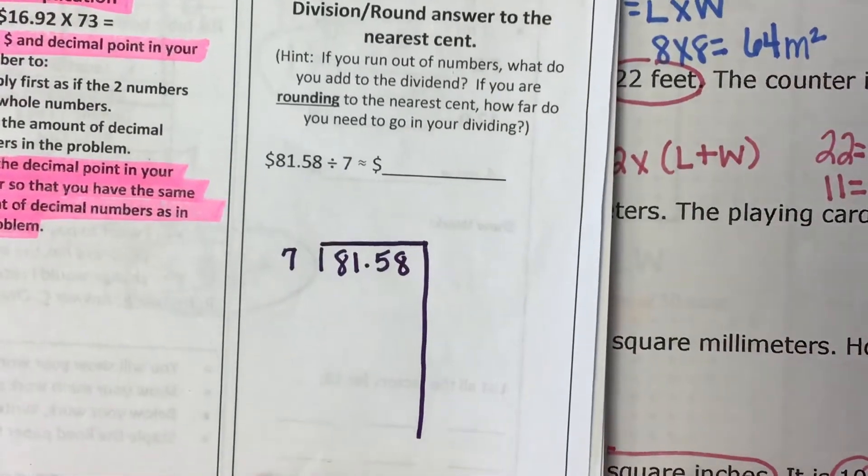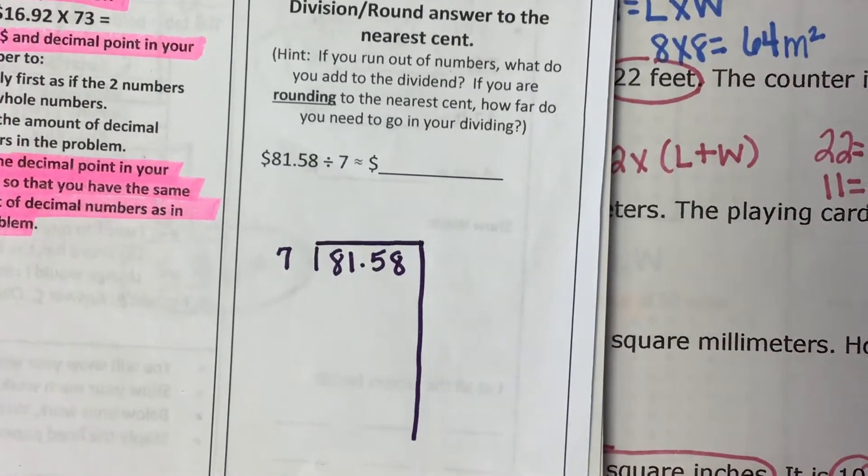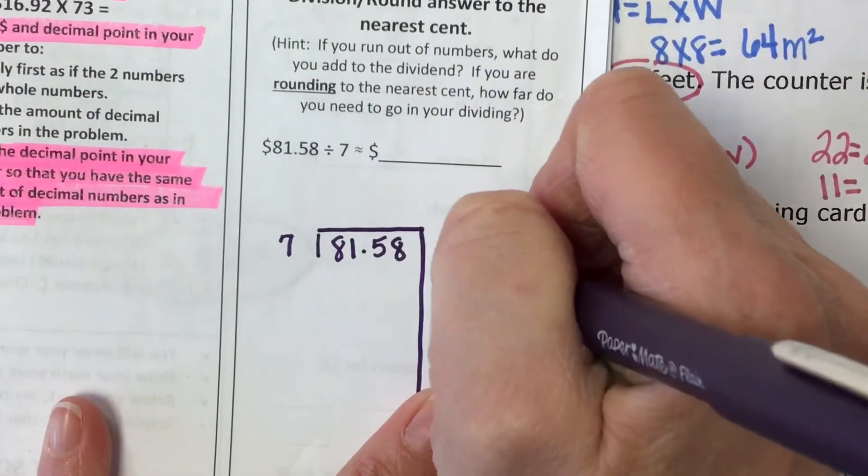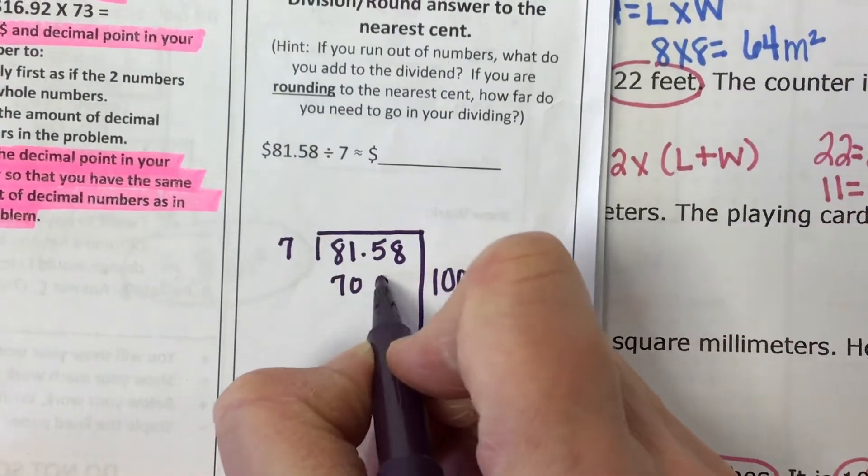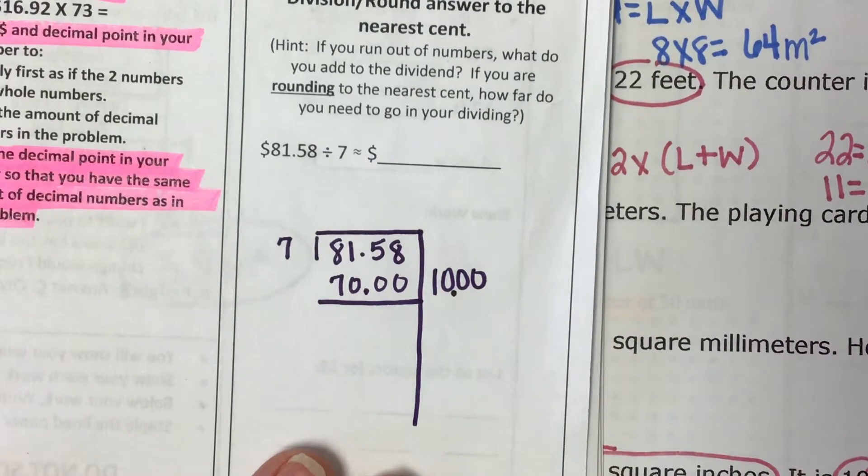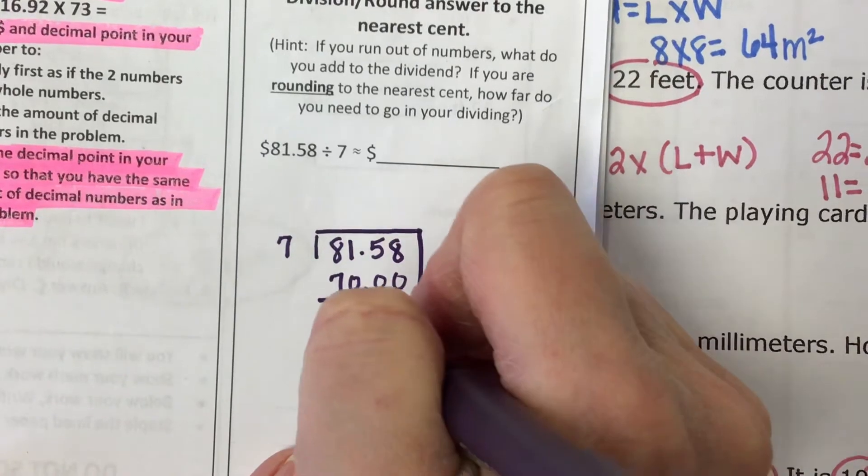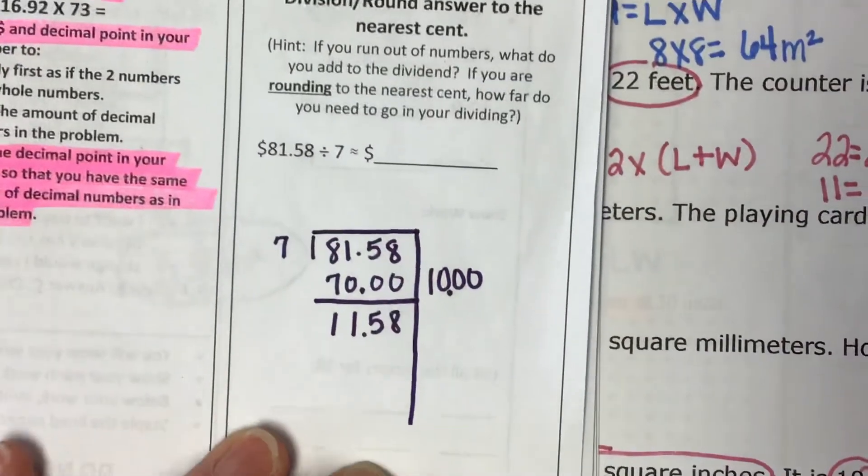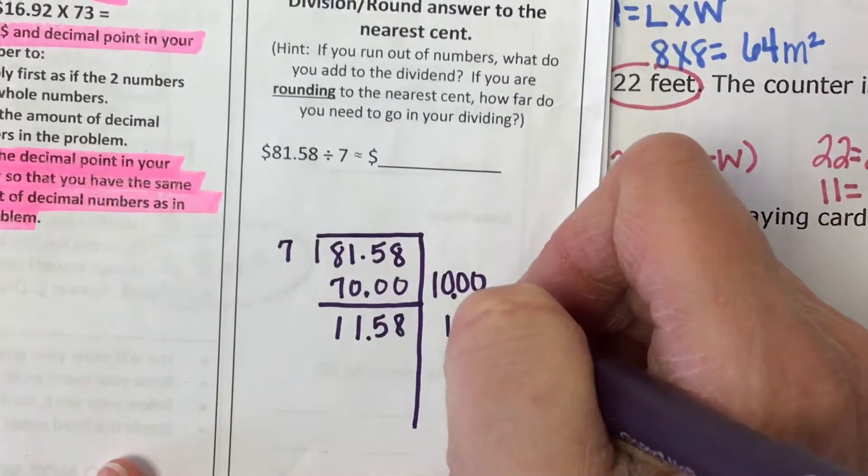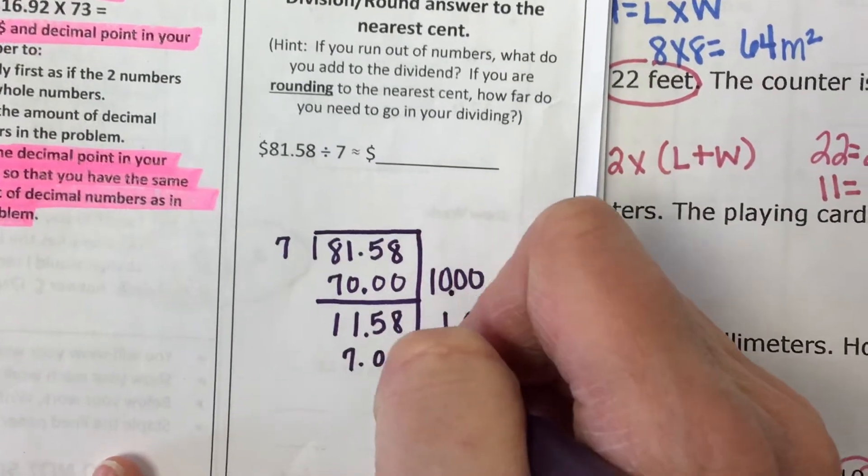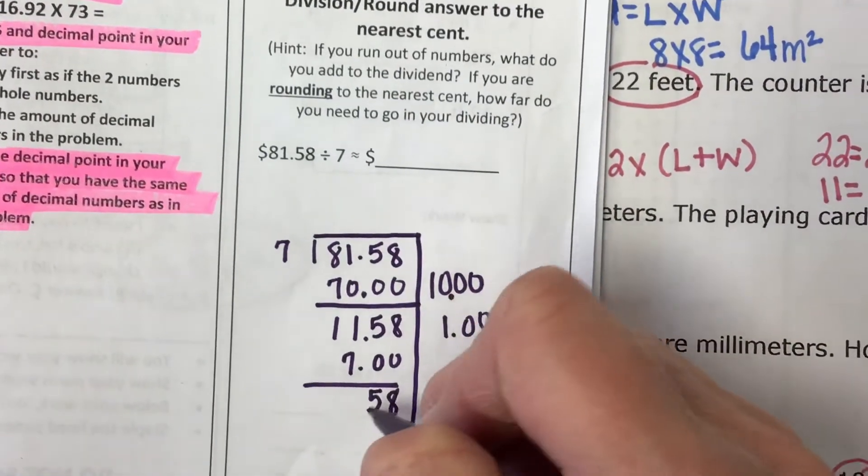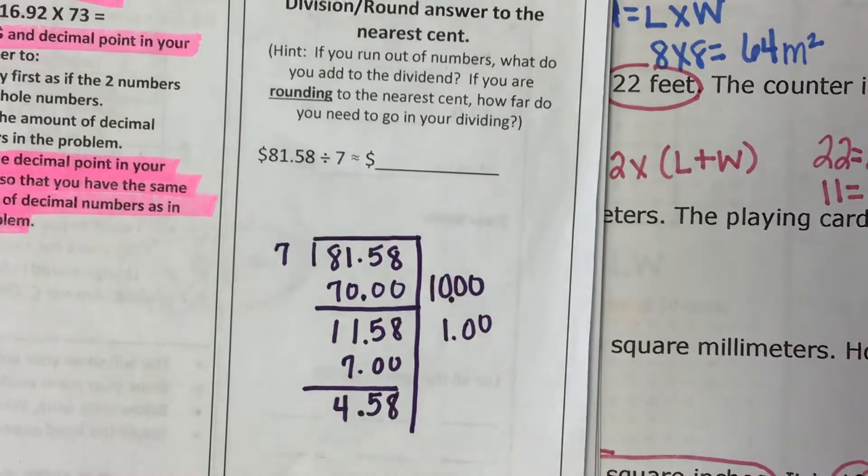Okay, I'm going to pretend that that decimal is not there, and I'm going to say that seven can go into 8,000 1,000 times. And I'm going to go ahead and subtract out 7,000, which I know is really, this is really going to be 10.00, right? And now I have 1158. 7 times 2 is 14, so that's too big. So I'm going to put it in there 100 times, which is the same as if I put my decimal back in, 7.00.